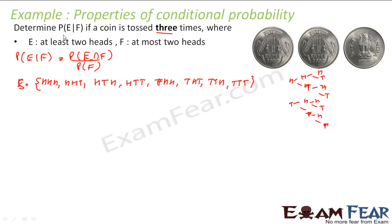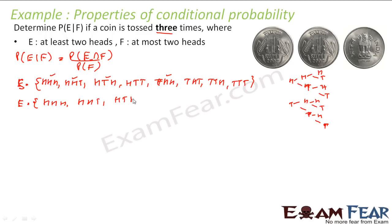E is 'at least two heads', that is two or more heads. Checking through the sample space: HHH - yes, HHT - yes, HTH - yes, THH - yes. So E will be HHH, HHT, HTH, and THH.